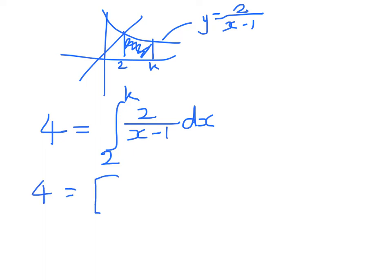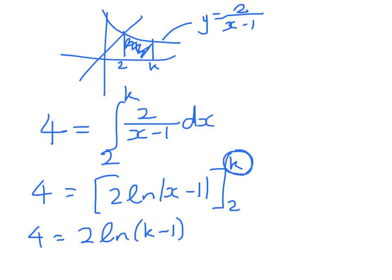So here we have 4 is equal to 2 log X minus 1, evaluated at K, minus that evaluated at 2. So we get 4 is equal to 2 log K minus 1. Now I can lose my absolute value signs now because I know that K is a positive number, and K minus 1 is also positive. Take away 2 times log of 1. We know that that's equal to 0.